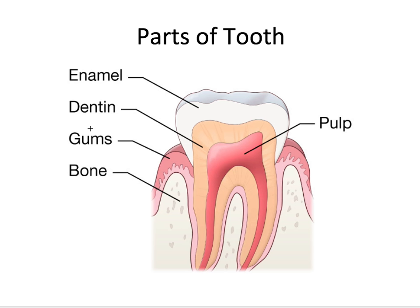Now let's talk about the parts of the tooth — specifically the anatomy of a tooth, what layers compose the teeth. This picture from the National Institute of Health lays it out nicely. The enamel refers to the outermost layer of the tooth. You may have heard it described as the hardest tissue in the human body, which is true — it's a very hard, calcium-rich surface that protects our teeth and is 96% mineral by weight.